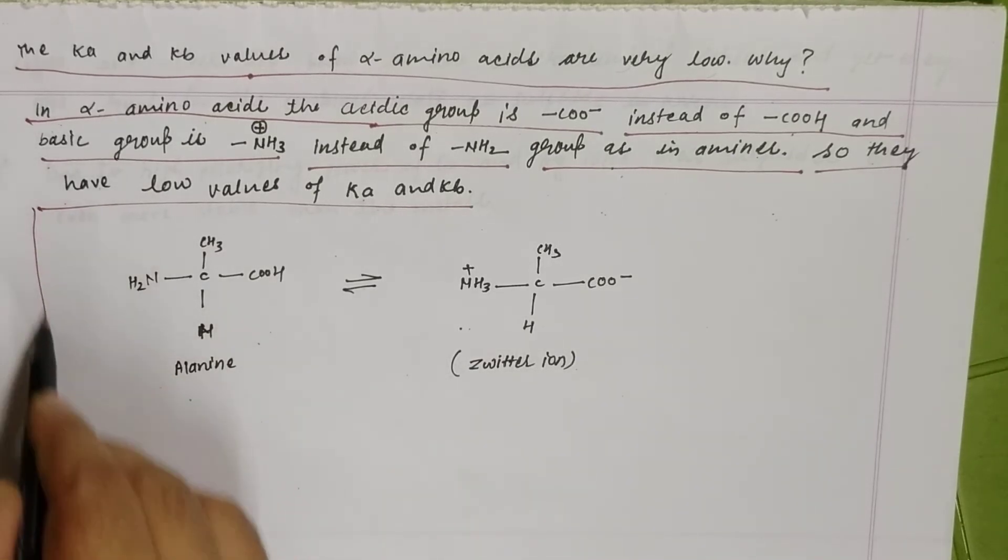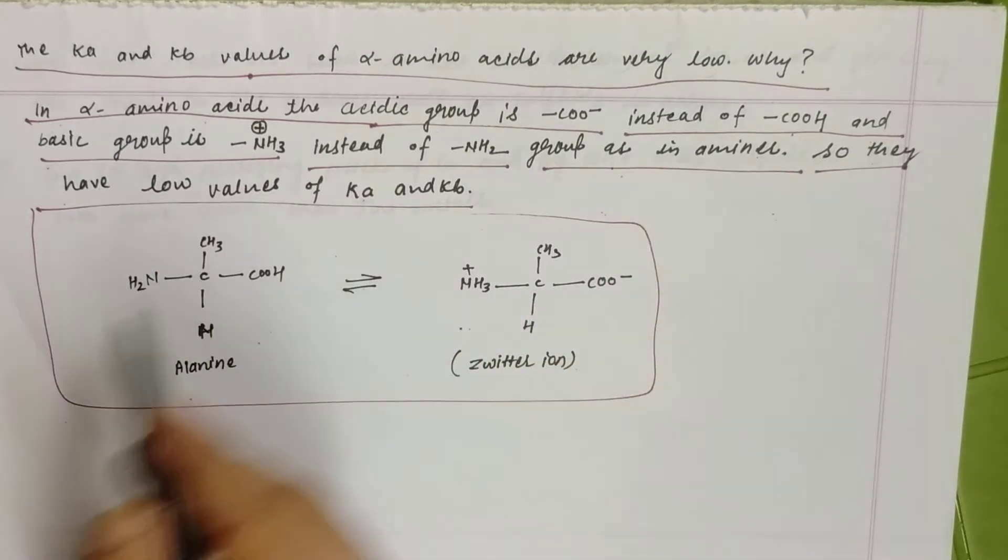The answer can also be explained that alpha amino acids exist in the form of the zwitterion. In the zwitterion, positive and negative charges both are there. As a result, Ka and Kb values are less for the alpha amino acid.